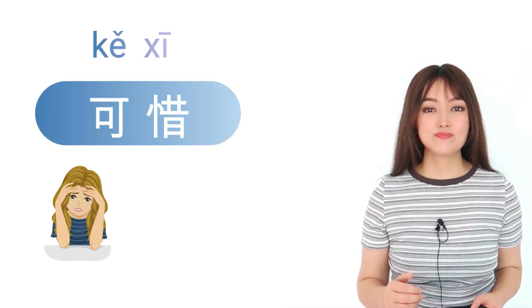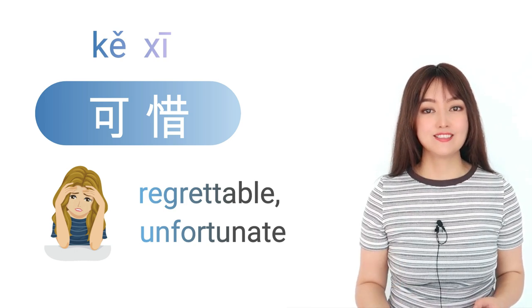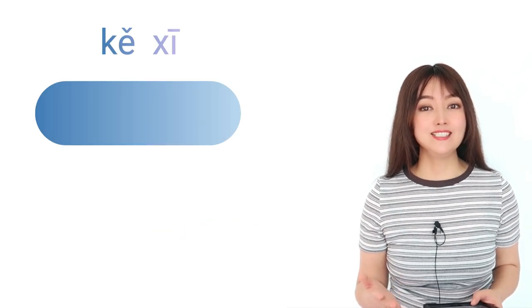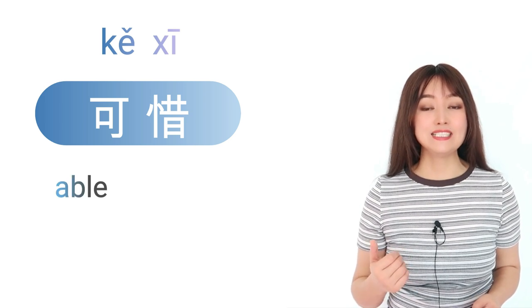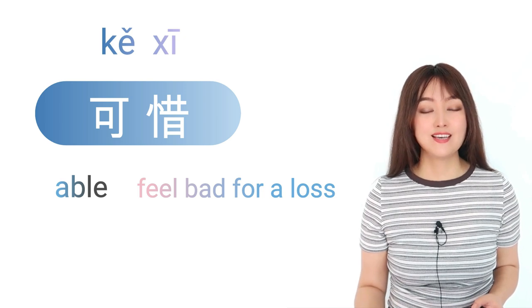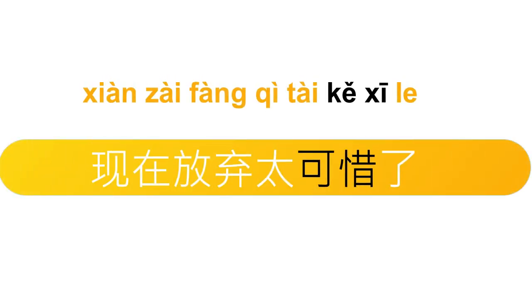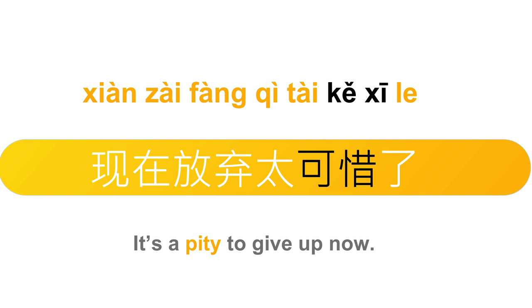下一个是可惜。Another word made with 可，regrettable, unfortunate。可的意思是 able，惜的意思是 pity for a loss, feel bad for a loss。可惜。现在放弃太可惜了。现在放弃太可惜了。